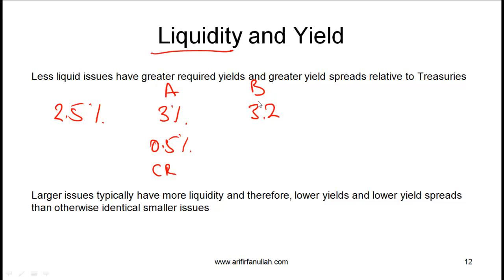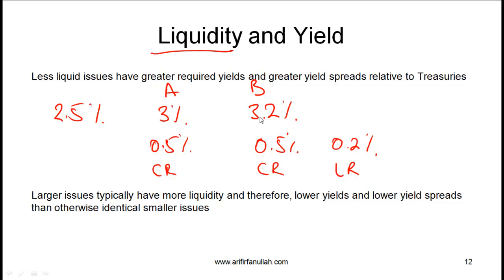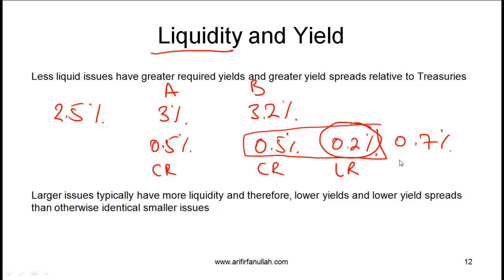For company B's bond, which has a yield of 3.2% with the same credit rating as A, we can say that 0.5% of the spread is explained by credit risk and the additional 0.2% can be explained by liquidity risk. Because the issue from company B is less liquid, investors are demanding a higher yield. That extra return attributable to the lack of liquidity is 0.2%. So the total spread of 0.7% is explained mostly by credit risk of 0.5% and also by liquidity risk of 0.2%.